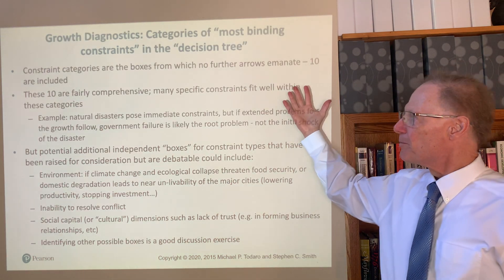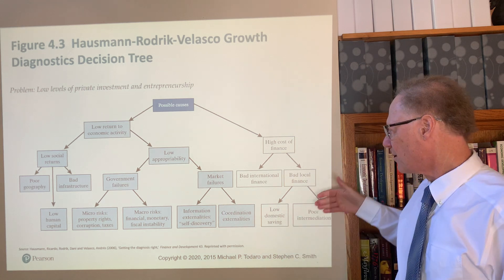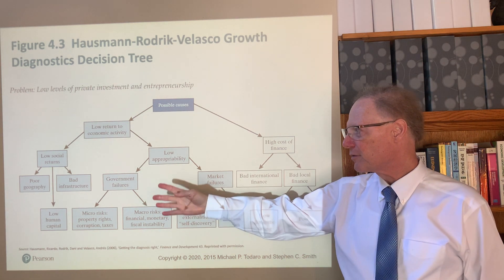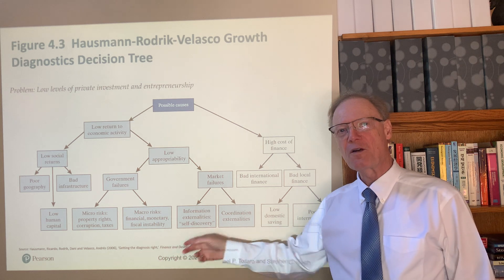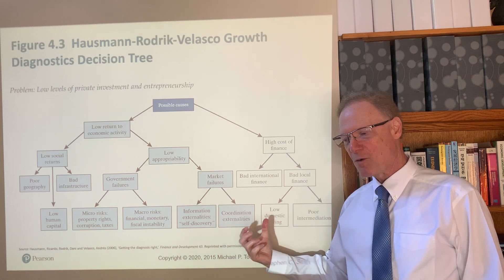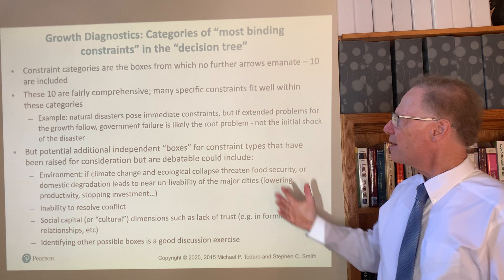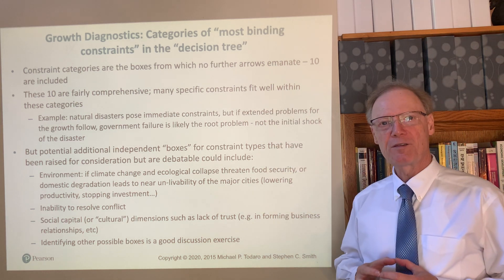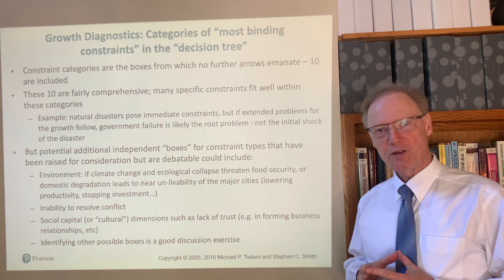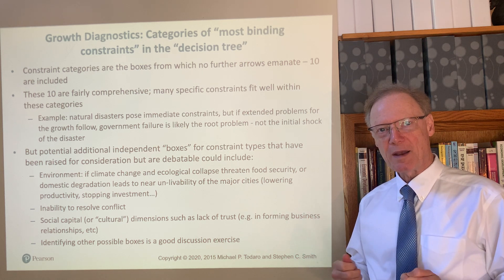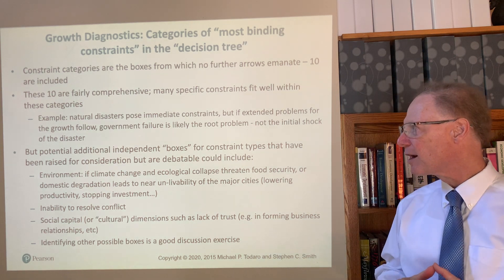These 10 boxes at the bottom, which we have looked at, represent the final boxes of attention. If you want to look at the diagram, it is those boxes from which no further arrows extend that are our 10 constraint categories with growth diagnostics. They're pretty comprehensive, and many constraints fit quite well within these categories. Many that you might think of as missing turn out to maybe not be a fundamental constraint area — they may be pointing us to something else, or may be an aspect of one of the other possible constraints.